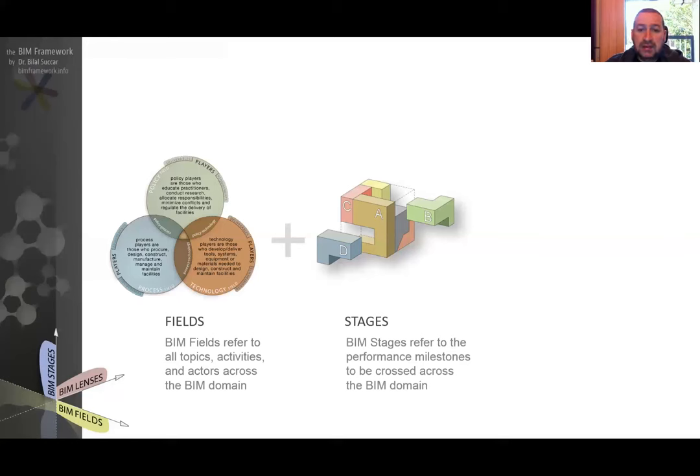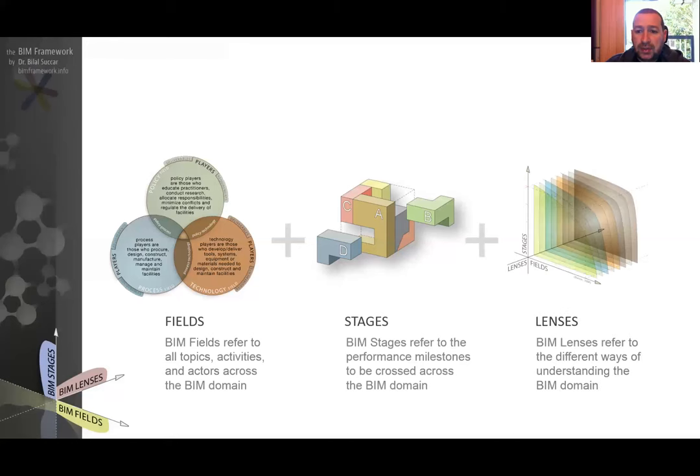The third dimension or axis is BIM lenses—a collection of different ways we can understand the BIM domain. We can understand it from the perspective of an architect or a policy maker, or by using lenses like data management or knowledge management. I'll cover BIM lenses in a separate video as well.